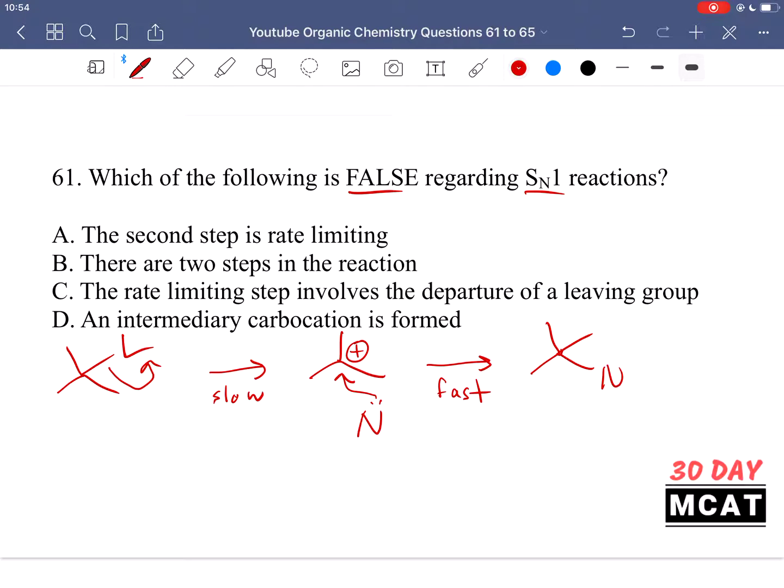Option A is saying the second step is rate limiting. That is false about SN1 reactions. It's the first step which is rate limiting not the second step. Option B says there are two steps in the reaction. This is true. It's SN1 meaning unimolecular. The rate determining step is dependent on one molecule which is the electrophile and not the nucleophile.